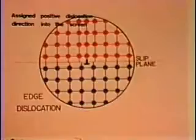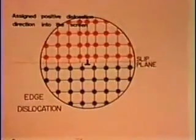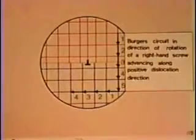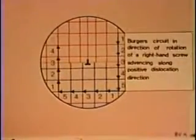The Burgers Vector is a precise statement of the magnitude and direction of shear that a dislocation produces. It is defined by means of a circuit around the dislocation on any surface which intersects the dislocation.